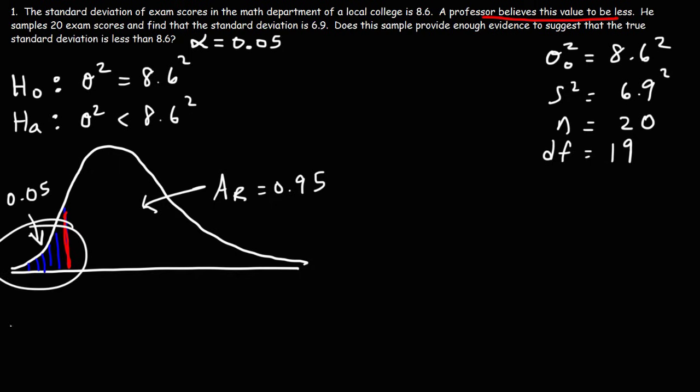This here, the small area, is the rejection region. Now if our calculated chi-square value falls in this area, we are not going to reject the null hypothesis. But if it's less than the critical value, highlighted in red, we are going to reject the null hypothesis.